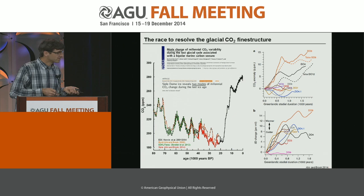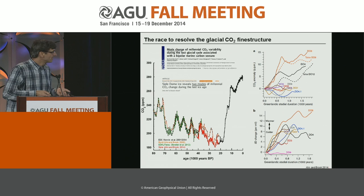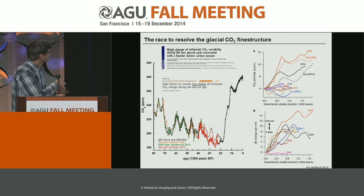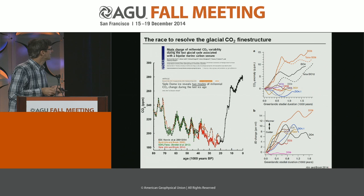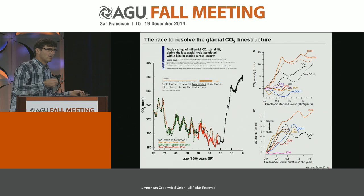As you are aware, we have all these wiggles, and these wiggles are caused by the bipolar seesaw mechanism. When Greenland is cold, CO2 warms, and there is a striking relationship between the duration of these Greenland stadials and CO2 release. It's a bipolar seesaw mechanism, and lots of papers dealt with mode changes and how this millennial-scale process worked.